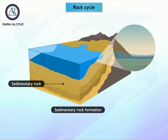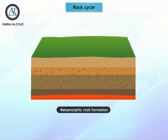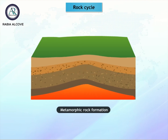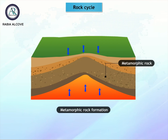When subjected to intense temperature and pressure, sedimentary and igneous rocks transform into metamorphic rocks. Due to movement of the earth's crust, rocks are subducted into the mantle where they melt and form magma, and the process continues.